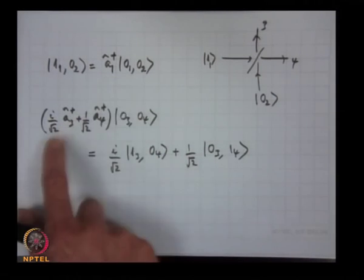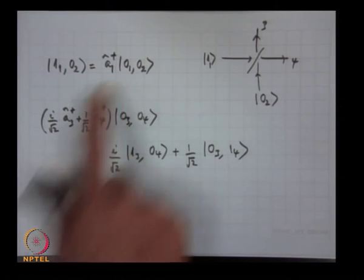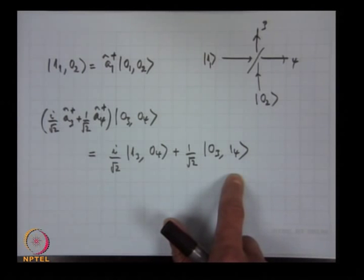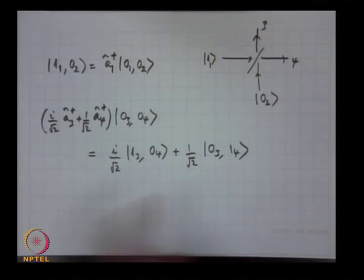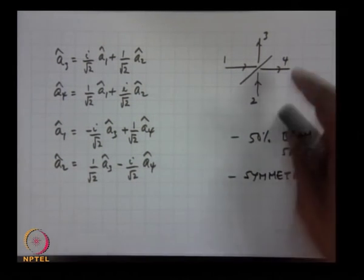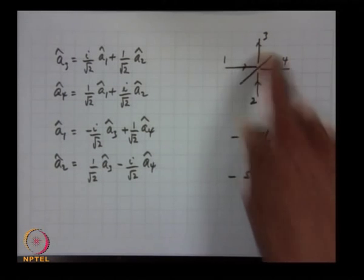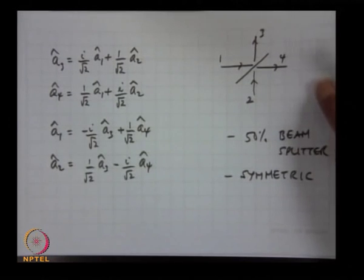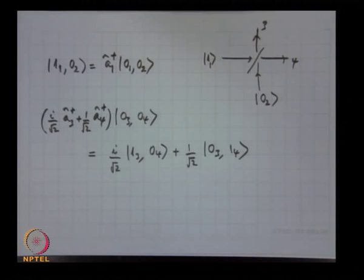To get the output state, we represent a1† in terms of the output operators a3† and a4†: a1† = (i/√2) a3† + (1/√2) a4†, and |0⟩1|0⟩2 becomes |0⟩3|0⟩4 at the output. We can also use a Heisenberg-picture-like formulation to represent output operators and compute observables such as probability of detecting a photon or the expectation of the electric field. But this Schrödinger-picture approach gives a clear picture of the output state when a single photon enters one port and vacuum enters the other.